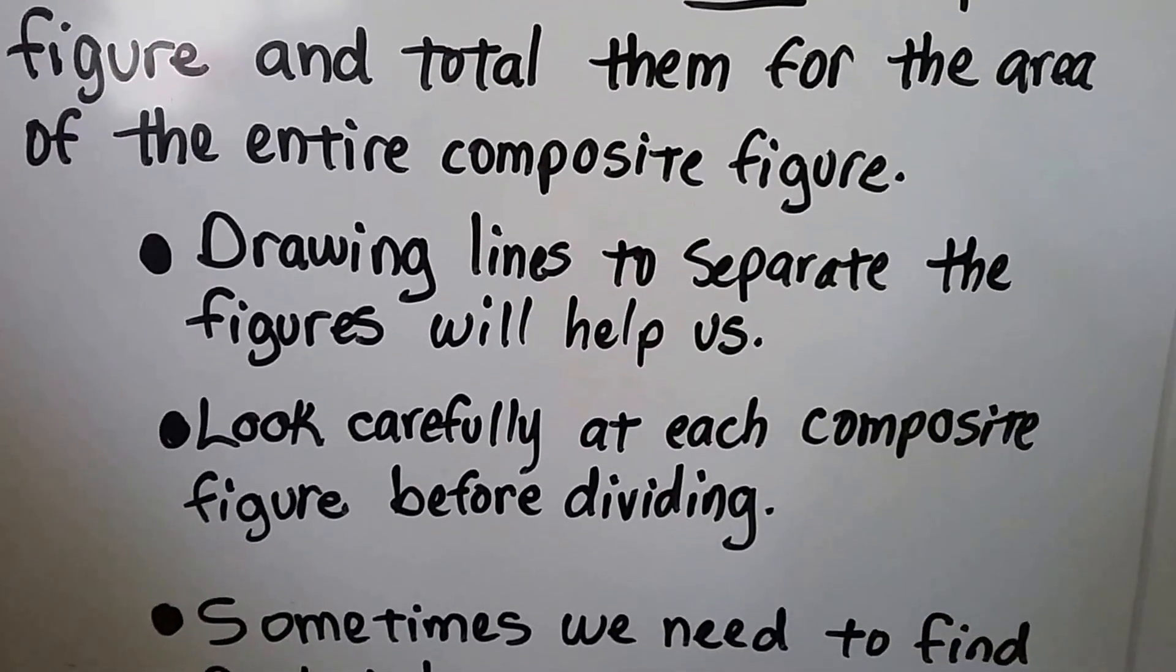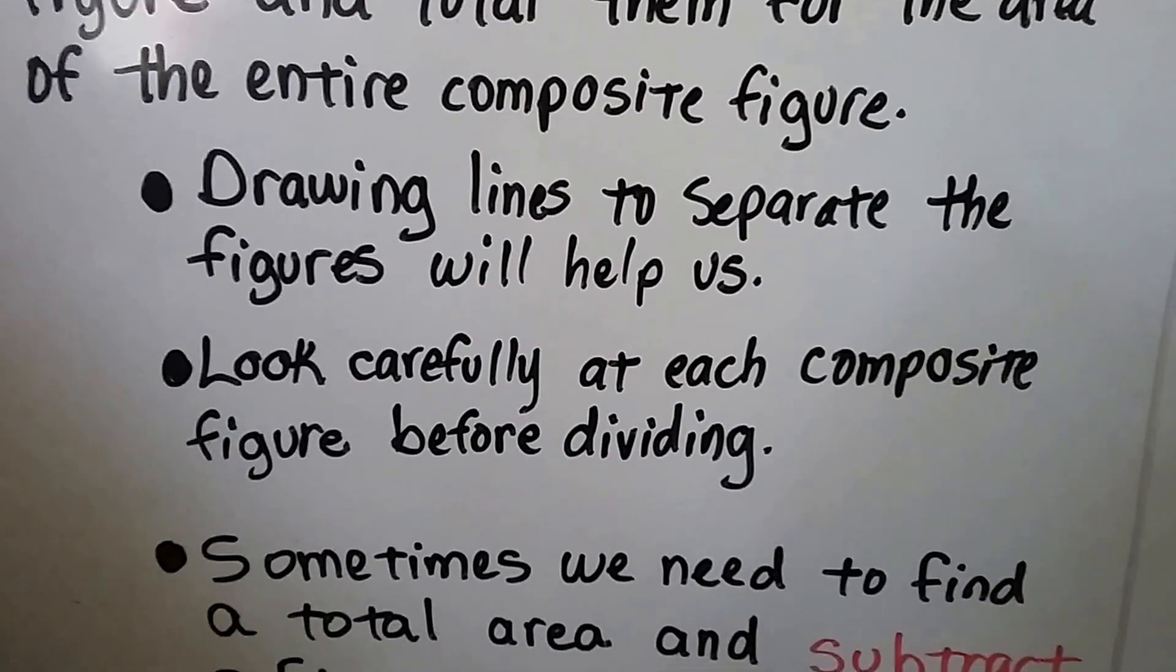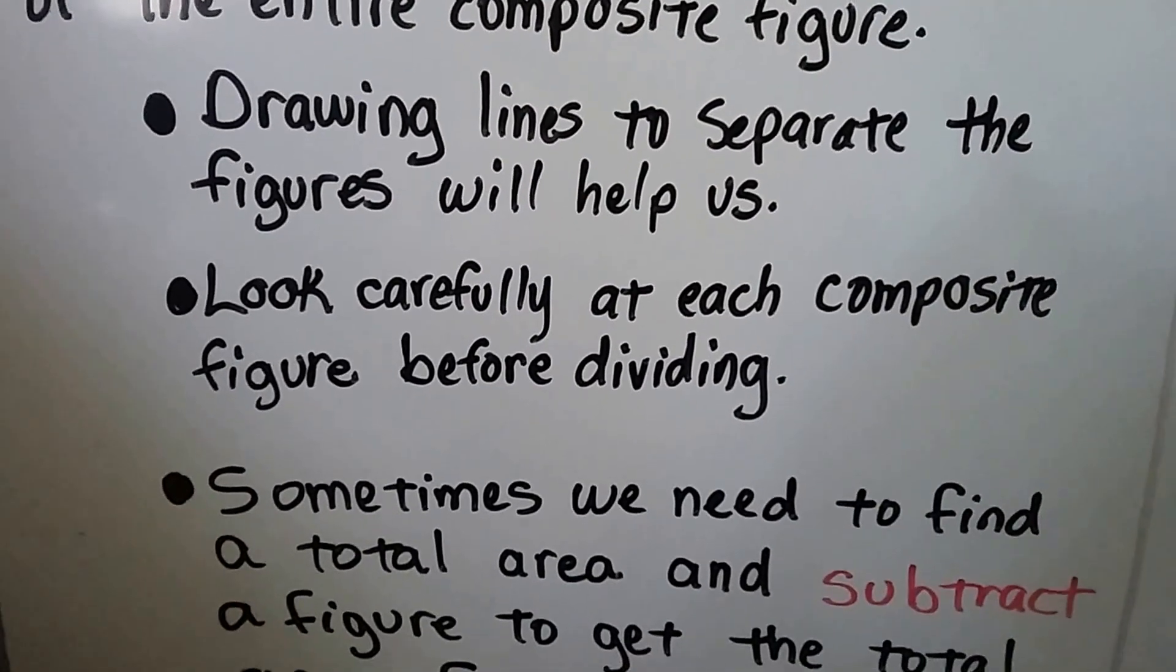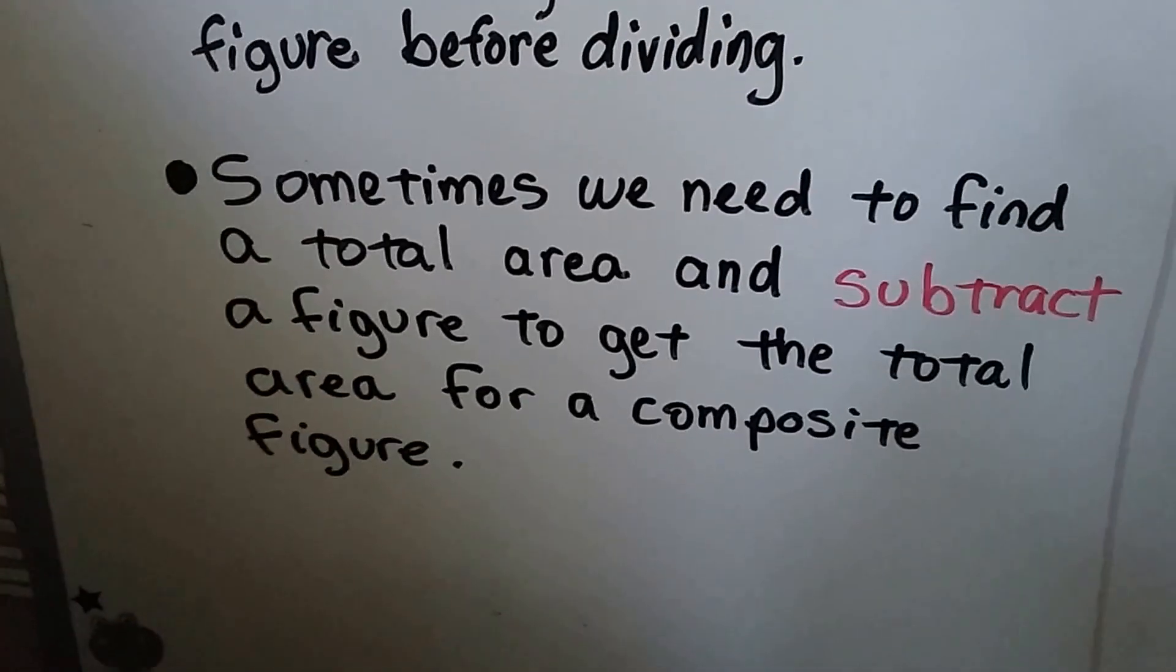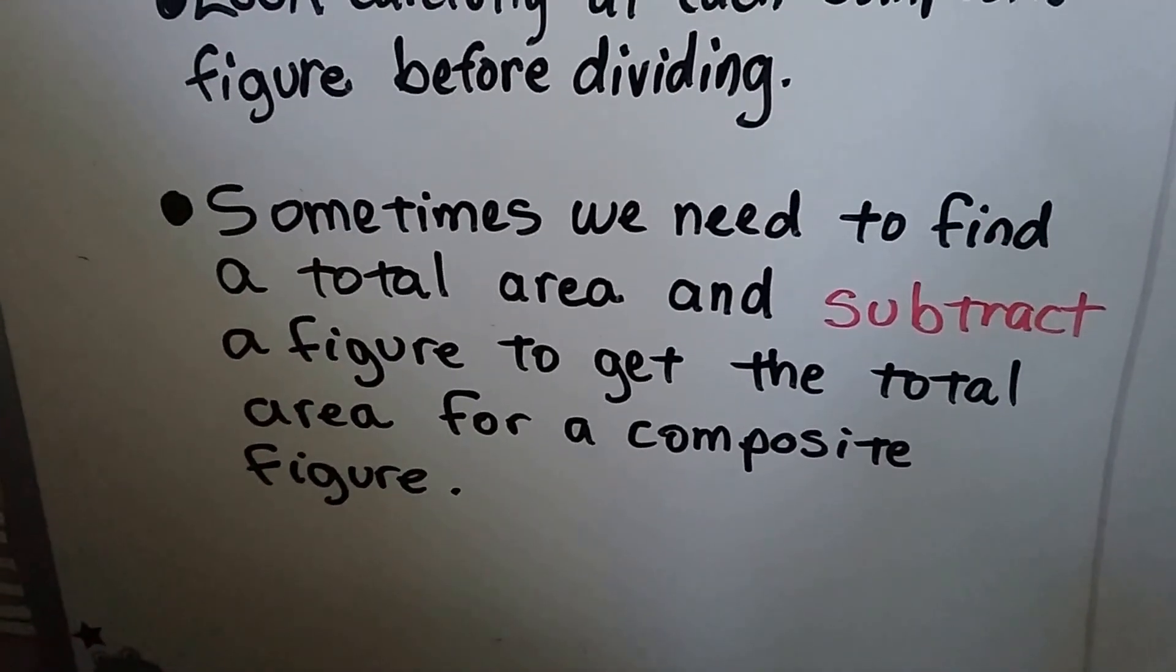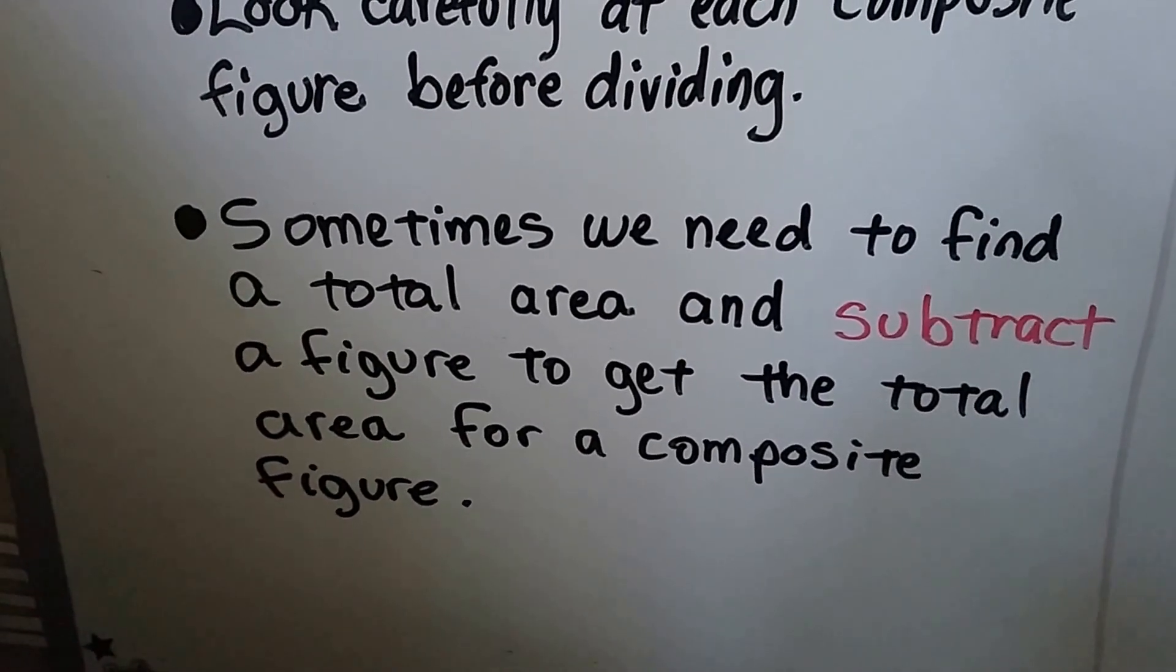Drawing lines to separate the figures can help us, so we look carefully at each composite figure before dividing it. Sometimes we need to find a total area and subtract a figure to get the total area for a composite figure.